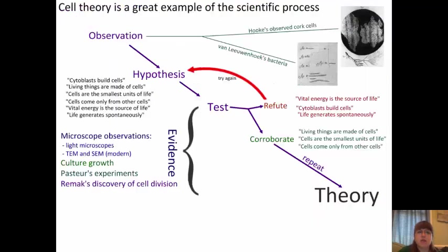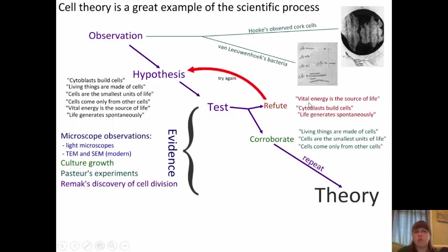Cell theory is a great example of a scientific process. We have an observation: Hooke observed cork cells, and along with Van Leeuwenhoek's bacteria drawings, these were our first observations, which led to a hypothesis. The hypothesis was tested, and then in the scientific process, it's either refuted — such as with our idea of vitalism, or the idea that cytoplasm builds cells, or life generates spontaneously — and if we hit that refute area, we go back to our hypothesis and try another.